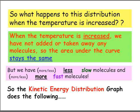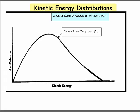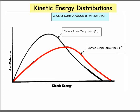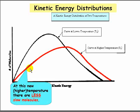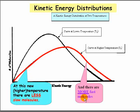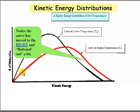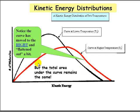So the kinetic energy graph does the following. At a higher temperature, indicated by the red curve, we have fewer slow molecules and more fast molecules. The whole curve has moved toward the right and flattened out a bit, but the total area under the curve remains the same.